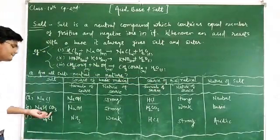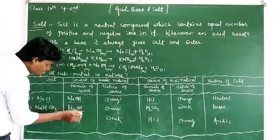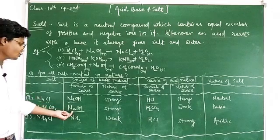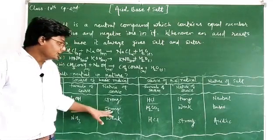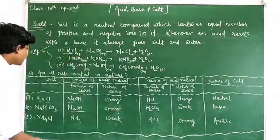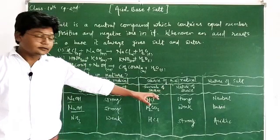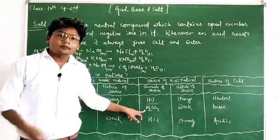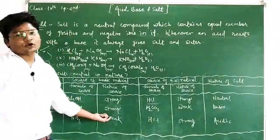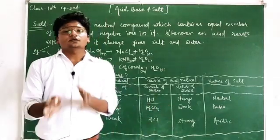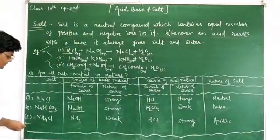The next example is sodium bicarbonate, also known as sodium hydrogen carbonate. The basic radical comes from sodium hydroxide, which is a strong base. The carbonate has come from carbonic acid, which is a weak acid. So if the base is strong and the acid is weak, the resulting salt will be basic in nature.